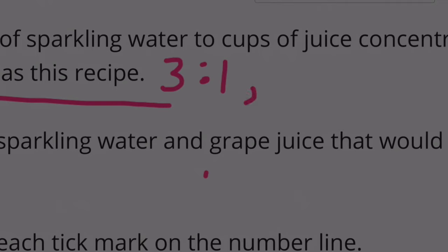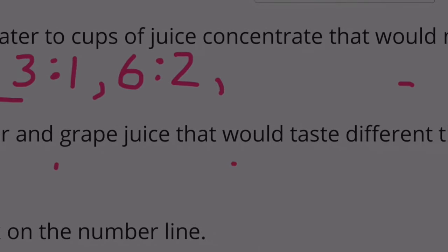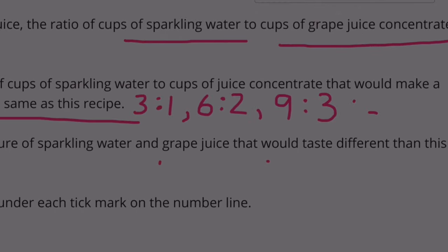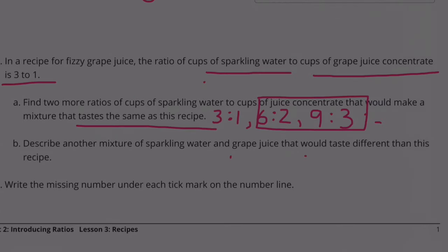Let's just double the amounts. We have a six to two because we doubled the serving of sparkling water and we doubled the serving of juice concentrate. And let's triple the original amount. Now we have nine cups of sparkling water and three cups of juice concentrate. We found two more ratios: a six to two and a nine to three.